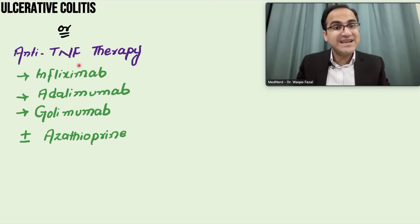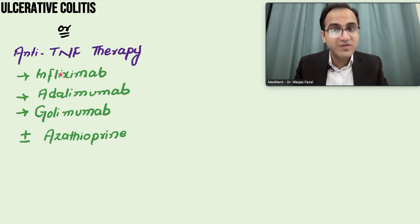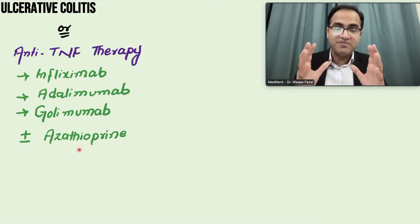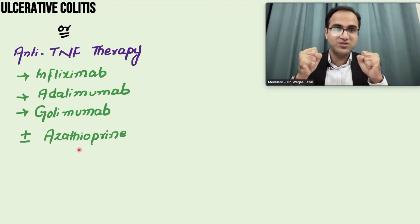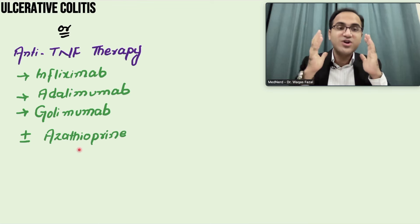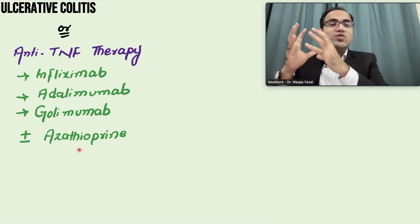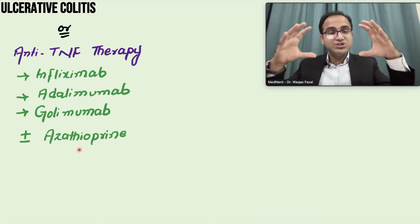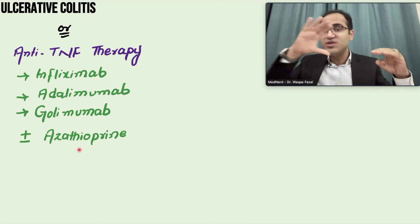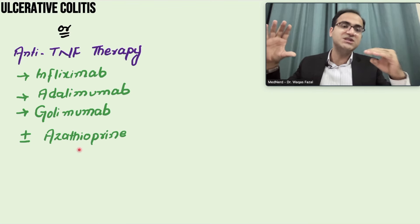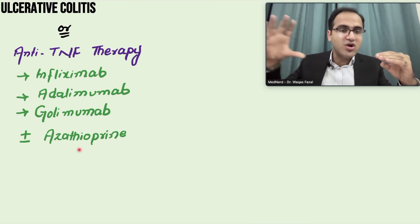Anti-TNF therapy can also be used in moderate to severe disease instead of corticosteroids. Options include infliximab with or without azathioprine. This is all induction therapy — you want to induce remission and control the patient's symptoms. When remission has been achieved, for maintenance therapy you never give steroids. Misalamine and azathioprine can be continued for maintenance, but corticosteroids are not used long-term — only for induction of remission.